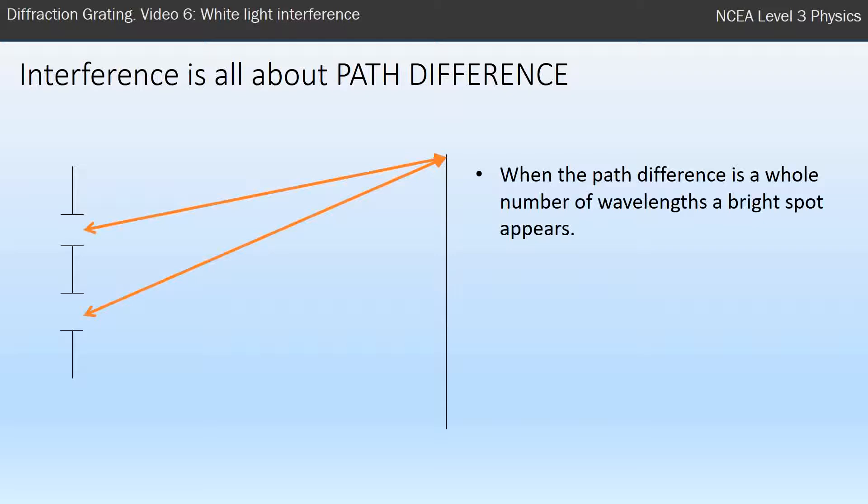When that path difference is a whole number of wavelengths, a bright spot occurs. Now, the issue here is the wavelength of red and blue light is different, right?